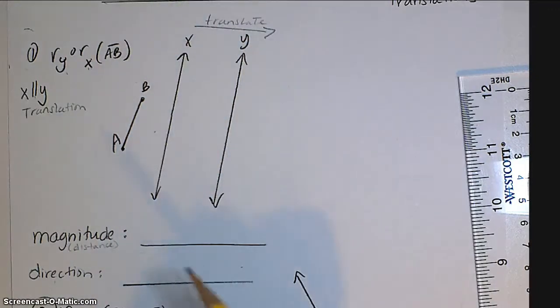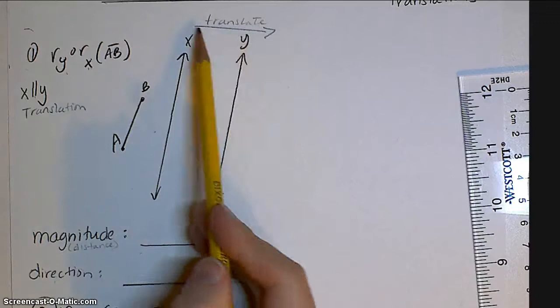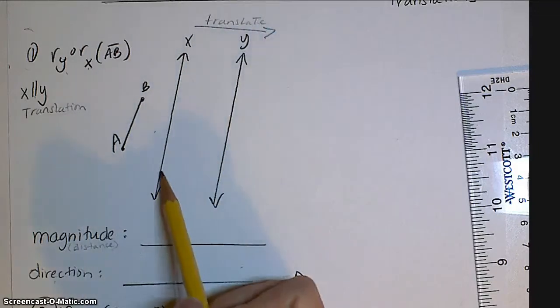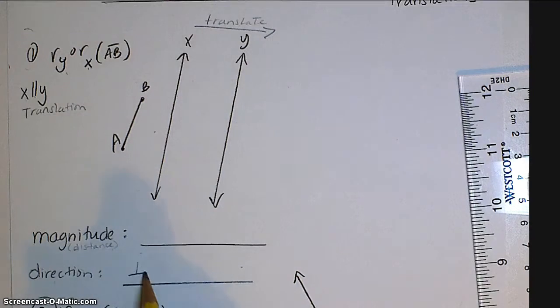And when we describe this direction, we know we always have to be perpendicular to our lines of reflection. So the way that we write our direction is perpendicular, we use this symbol, from x to y. Okay, so that's our direction.